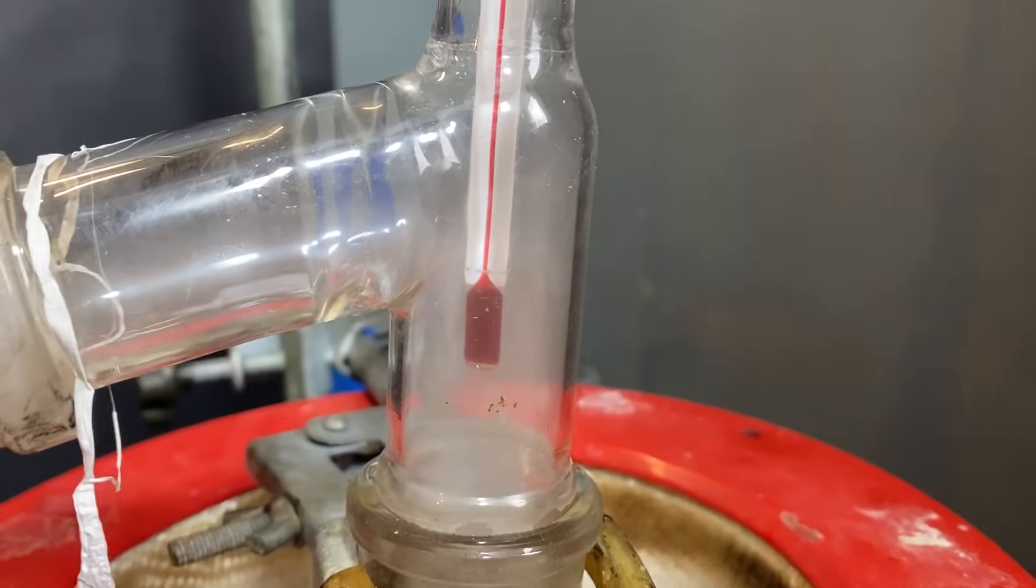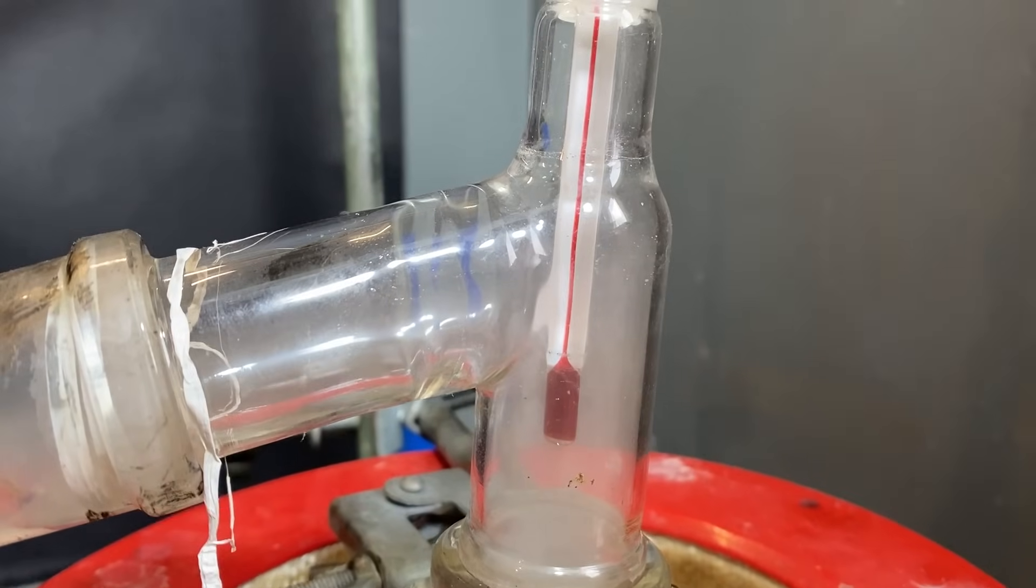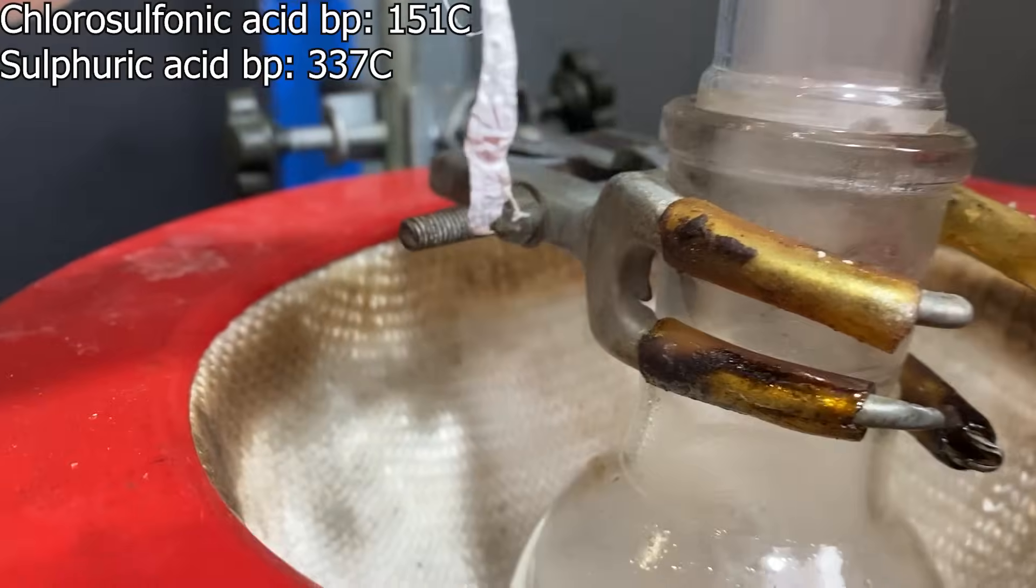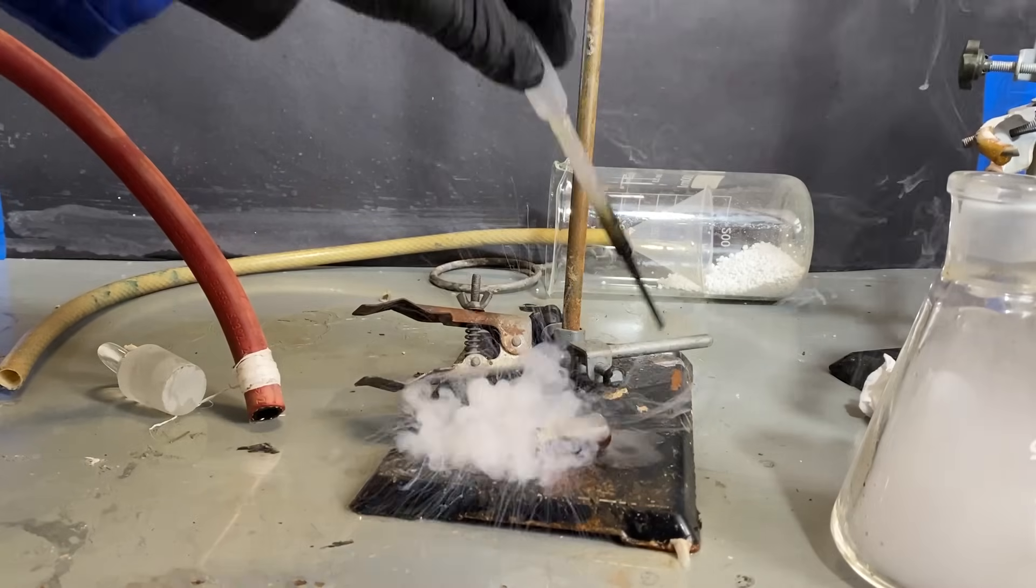Anyway, I've distilled the whole thing to separate the superacid from the sulfuric acid, which is surprisingly easy, actually, because of the difference of the boiling points. Anyway, I've bottled it, and I totally didn't spill it again.